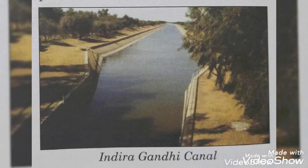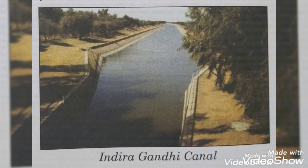Point number 2: Small channels are dug to take water from the rivers to the fields. These are called canals. Indian farmers have been using three main methods of irrigation in the northern plains: canals, ponds, and tube wells. There is a good network of canals in Punjab, Haryana, Uttar Pradesh, Bengal, and Tamil Nadu. The Indira Gandhi Canal takes water into the desert region of Rajasthan.